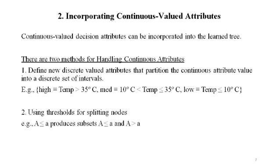In particular, for an attribute A that is a continuous value, the algorithm can dynamically create a new boolean attribute A_c, such that it is true if A is less than or equal to C, and false otherwise. The key question is how to select the best value for the threshold C.